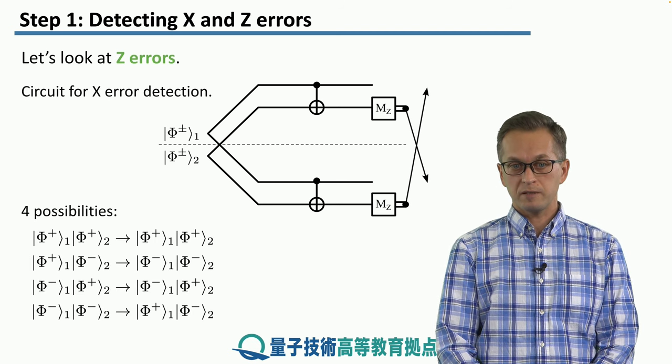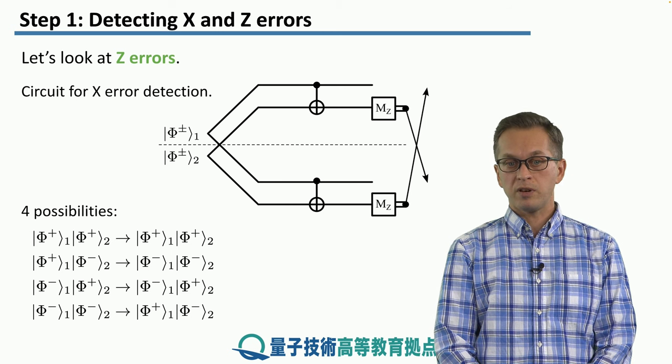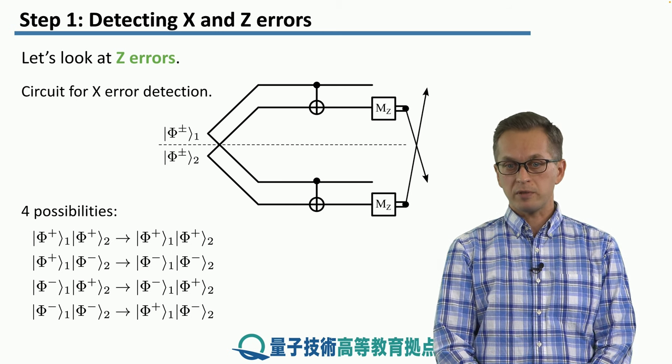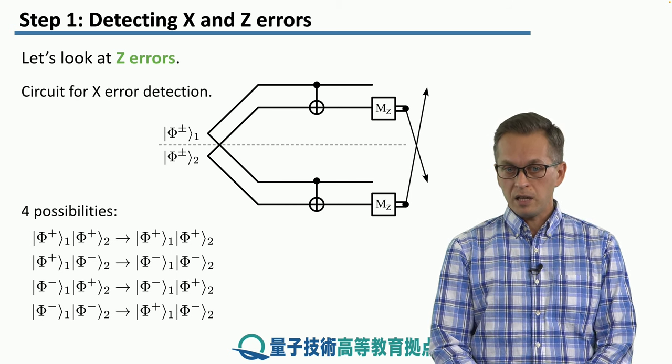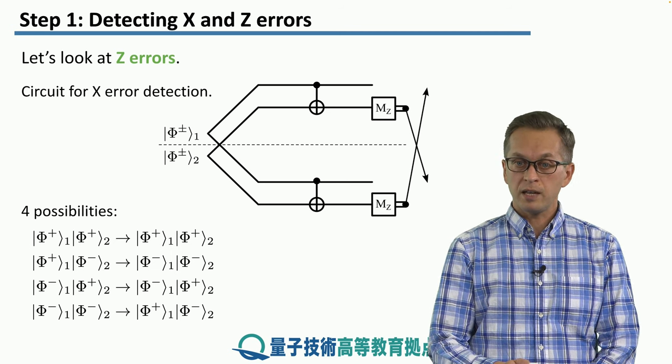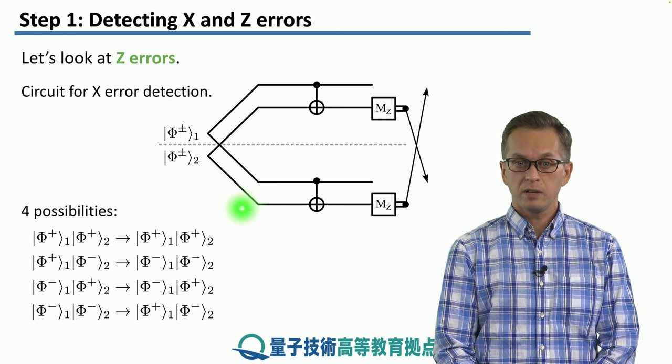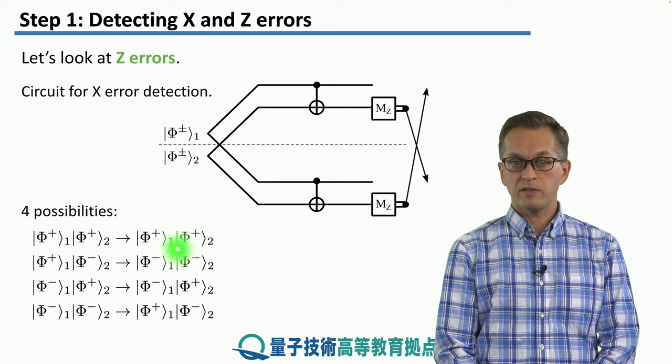And here are the four possibilities. Notice that, again, if both inputs are unaffected by noise, nothing happens. But if only the second pair is affected by noise, then the error actually propagates through the CNOT gates onto the first pair. The first pair also becomes phi minus.